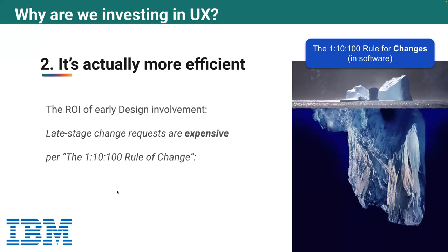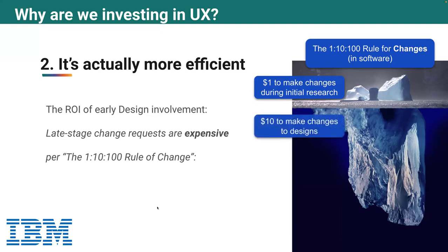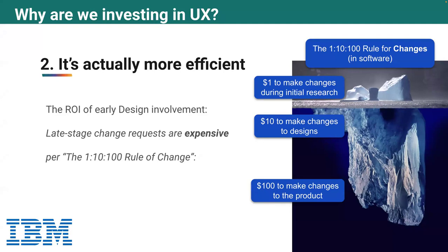And so they created this thing commonly known as the 1-10-100 rule of change. To make a change to some piece of software: initially during your research, if you find you need to make a change to something you were planning, it costs about $1. Relative to that, if you were to make the changes to the designs later — just the designs, not the software — that's about 10 times more expensive. But if you were to make the change after the software has already been encoded, that's about 100 times more expensive. So the idea is that by thinking about our users from the beginning, we're actually saving everyone's time and cost investment.